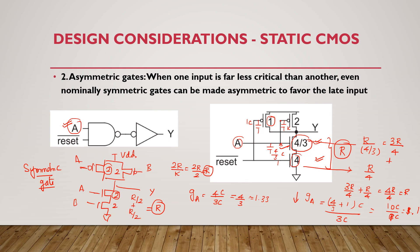If the logical effort is lesser, the delay will be lesser, because delay equals parasitic delay plus the product of logical effort and electrical effort. If G is lesser, the delay is lesser, and if delay is lesser, speed will be higher. That's why we convert a symmetrical gate into an asymmetrical gate by choosing different widths when one input is far less critical than the other.